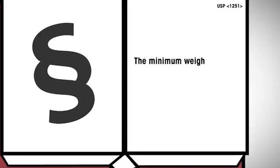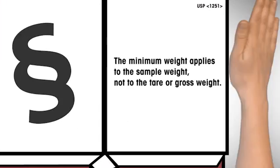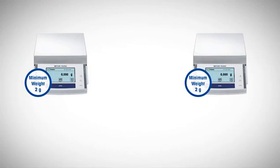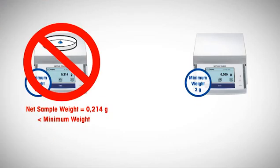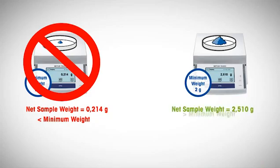The minimum weight applies to the sample weight, not to the tare or gross weight. A common misconception is that if the tare vessel is larger than the minimum weight, the weighing process is in compliance. It is now clearly stated that the net sample weight must be considered and not the gross weight.